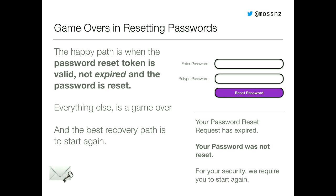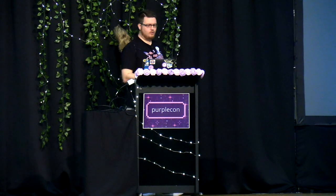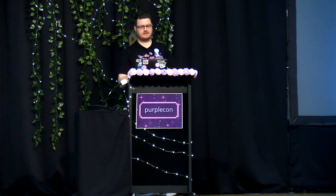Then there's if you get through to the password reset page. The happy path here is when your token is valid, not expired, and you successfully enter the same password into the enter password and retype password fields, and then your password is reset. Everything else is kind of a game over, and once again the best recovery path is to start again. Good language to use here is to just tell somebody that their reset request has expired. It's really important to let somebody know that their password was not reset if you show an error here. Because the worst thing as a user in these flows is to get to the end and wonder: did that reset my password or not? And then being in this very indeterminate state. But once again, we can model and work on all of this off the token, and our recovery path is to start again.